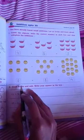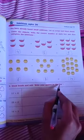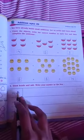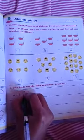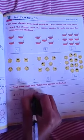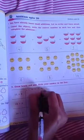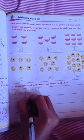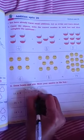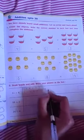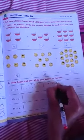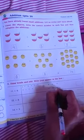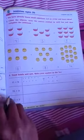Draw beads and add. Write your answer in the box. 11 beads. So, we draw here 11 beads. 1, 2, 3, 4, 5, 6, 7, 8, 9, 10, 11. Plus 6 beads. 1, 2, 3, 4, 5, 6. So, how many are there?